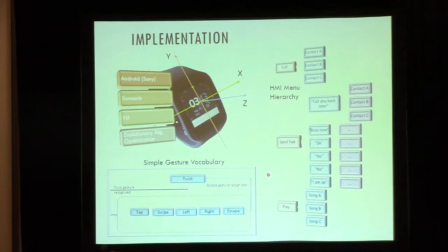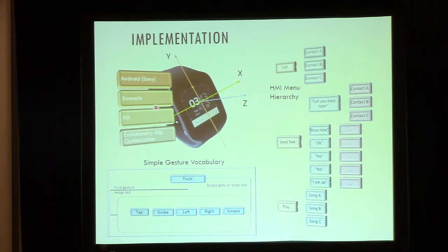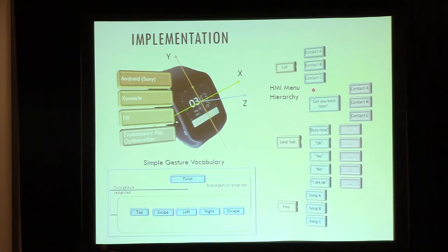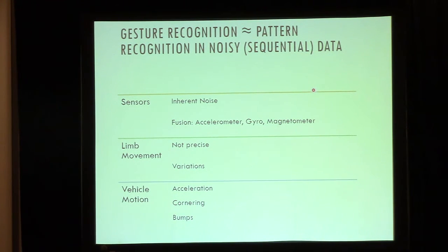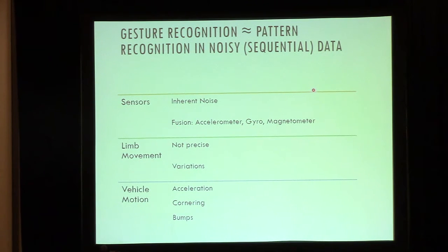This is the actual research implementation. I built an app that runs on a smartwatch on Android, written in F-sharp using the Xamarin toolkit. It recognizes a simple gesture vocabulary — you can see it below — in order to drive a mock menu hierarchy on the right. Now, if you look at gesture recognition, it's nothing more than recognizing patterns in noisy data. Sensors are inherently noisy, human limb movements are not precise, and in our case you also have vehicle motion to contend with, so it's a very noisy data environment.